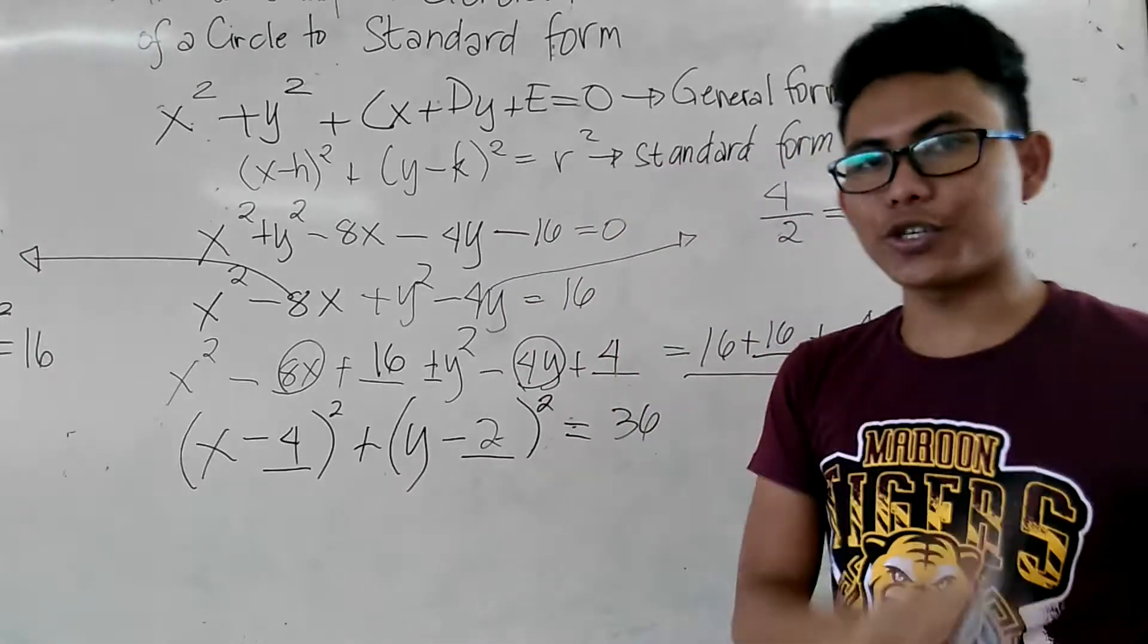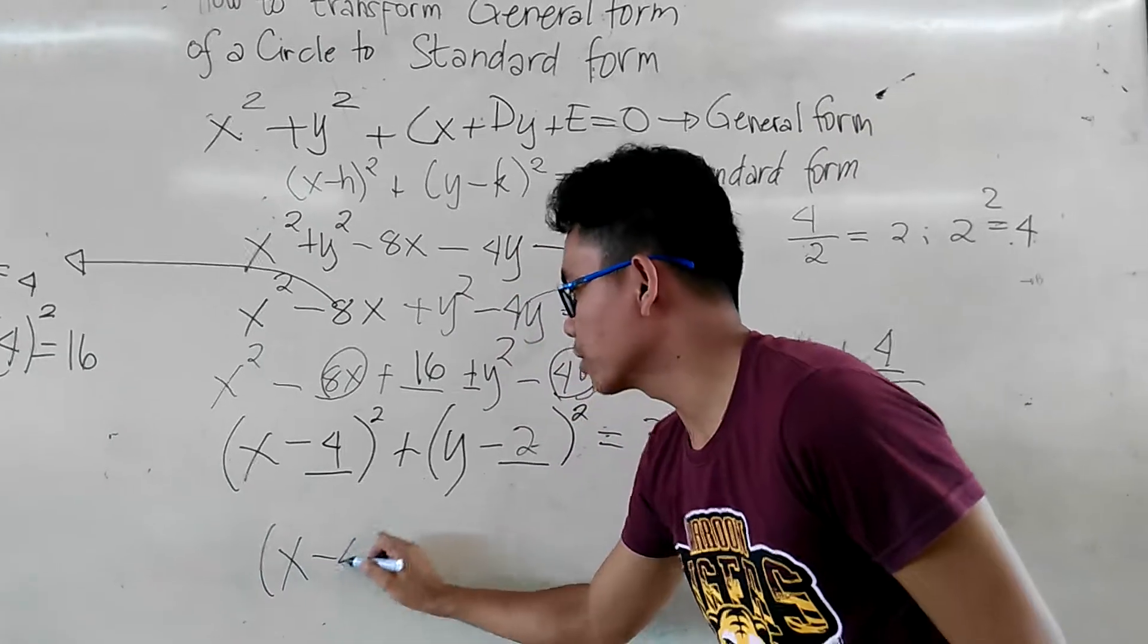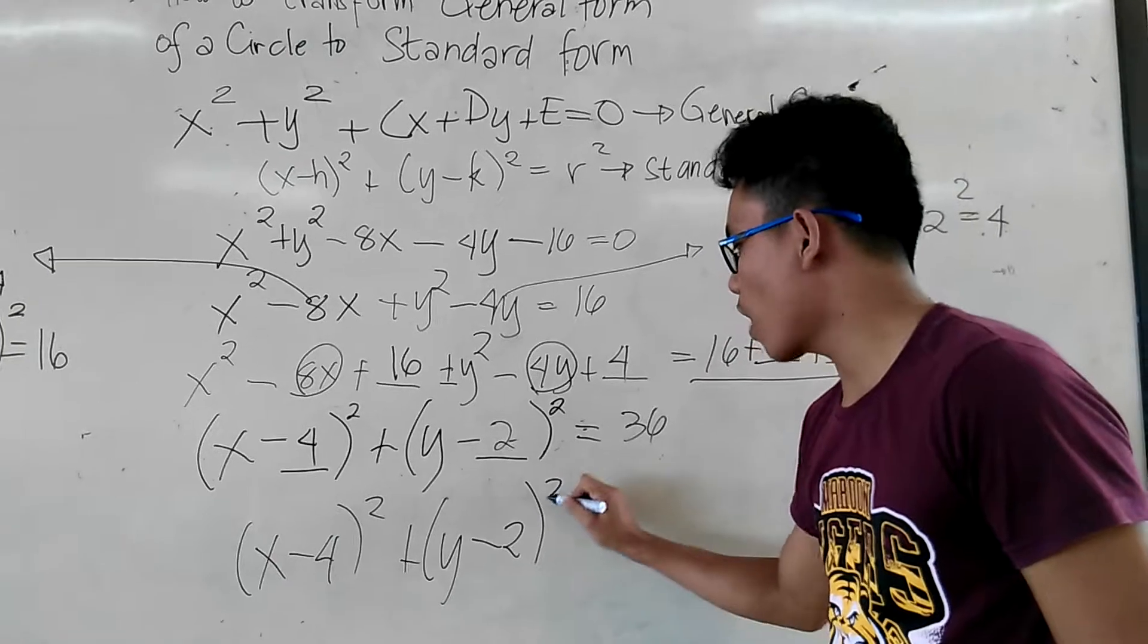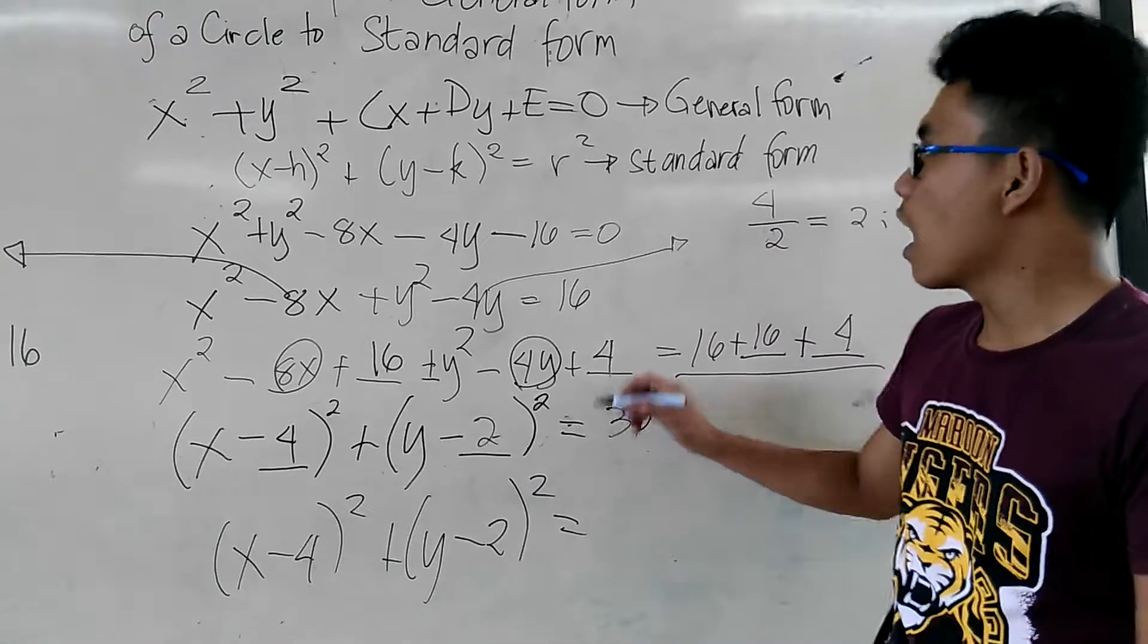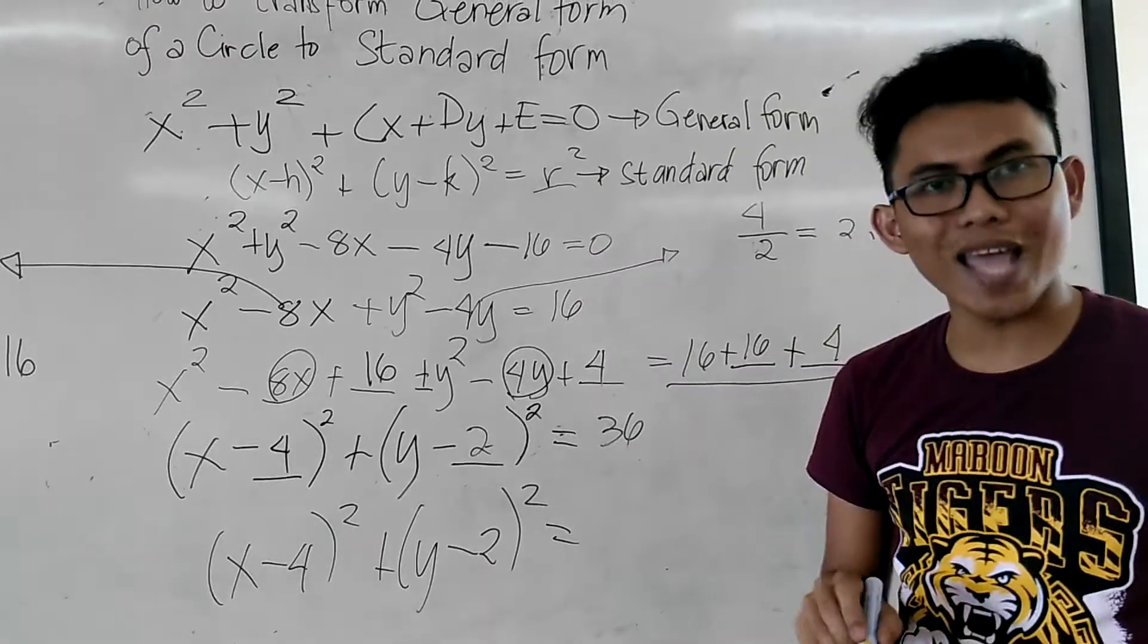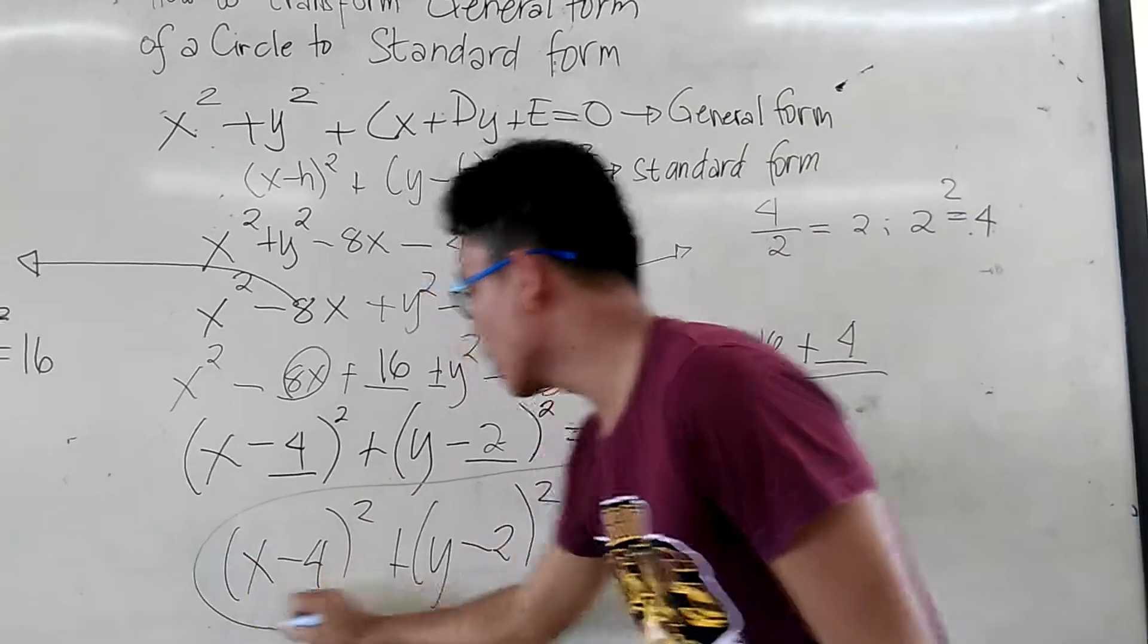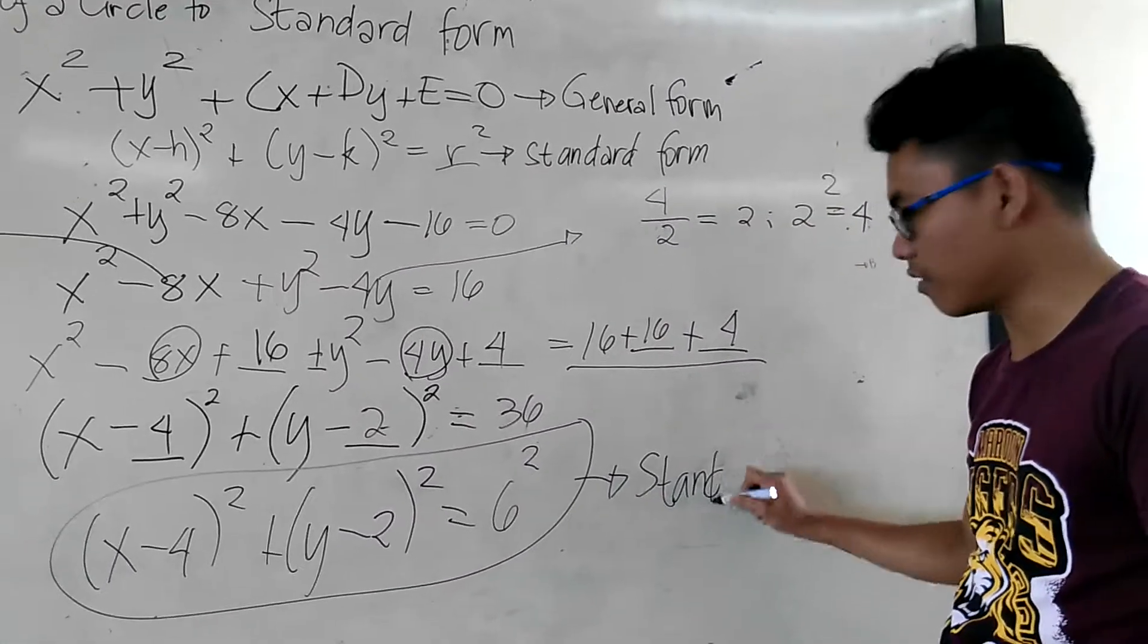So, now, the final answer now, the standard form now is we have x minus 4 squared plus y minus 2 squared is equal to the square root of 36 is 6. Kaya, remember, r squared po yan. So, kaya naging r squared. So, kaya, ito po ang standard form natin.